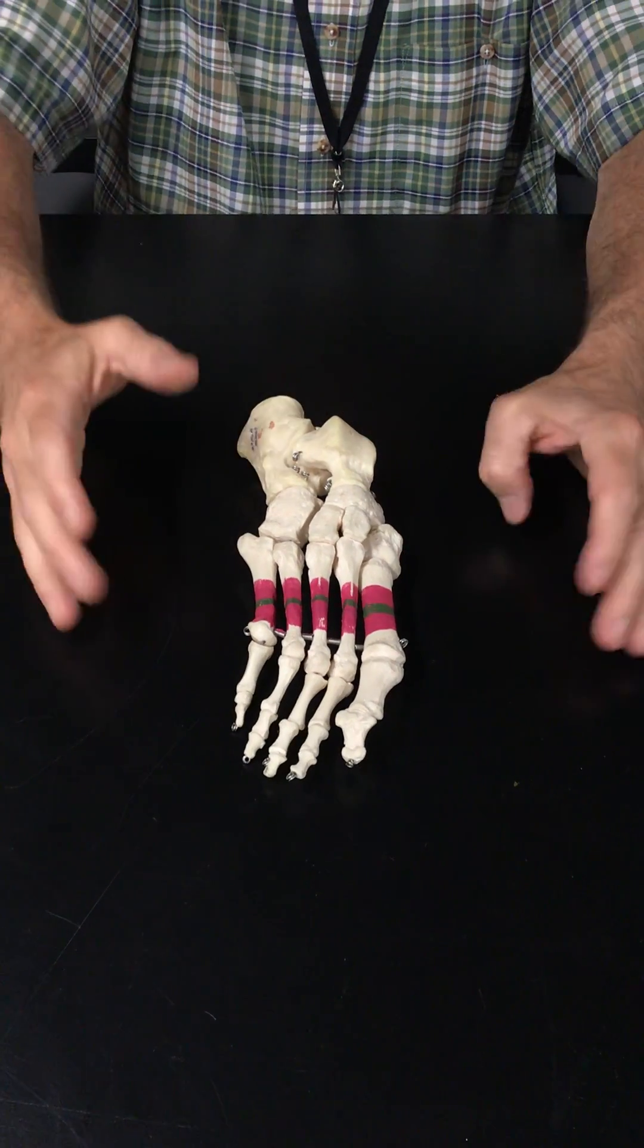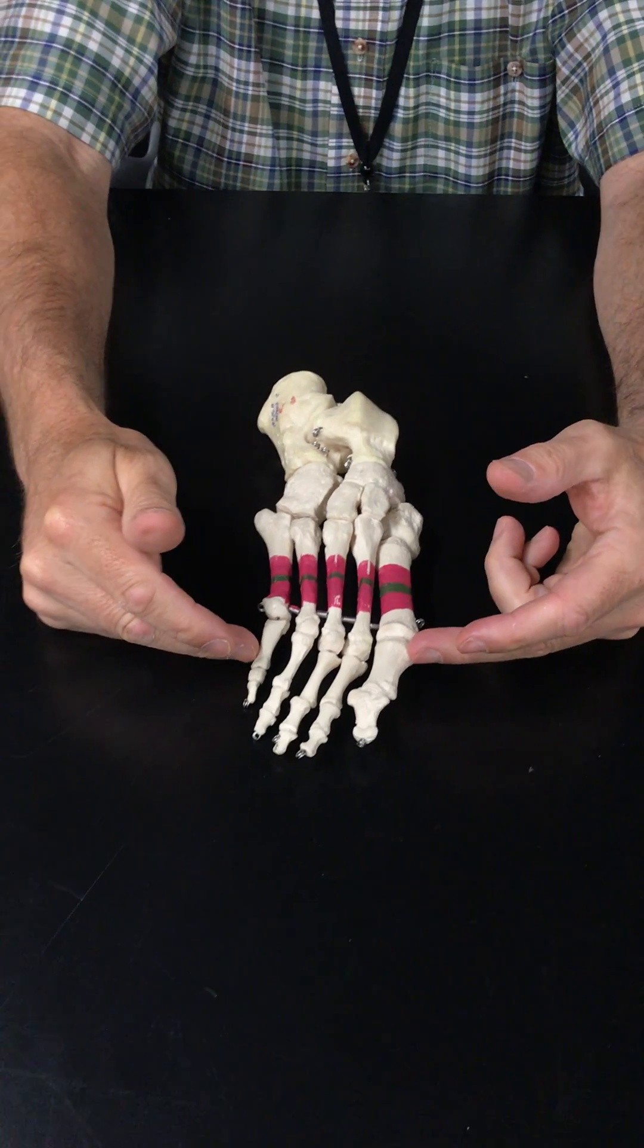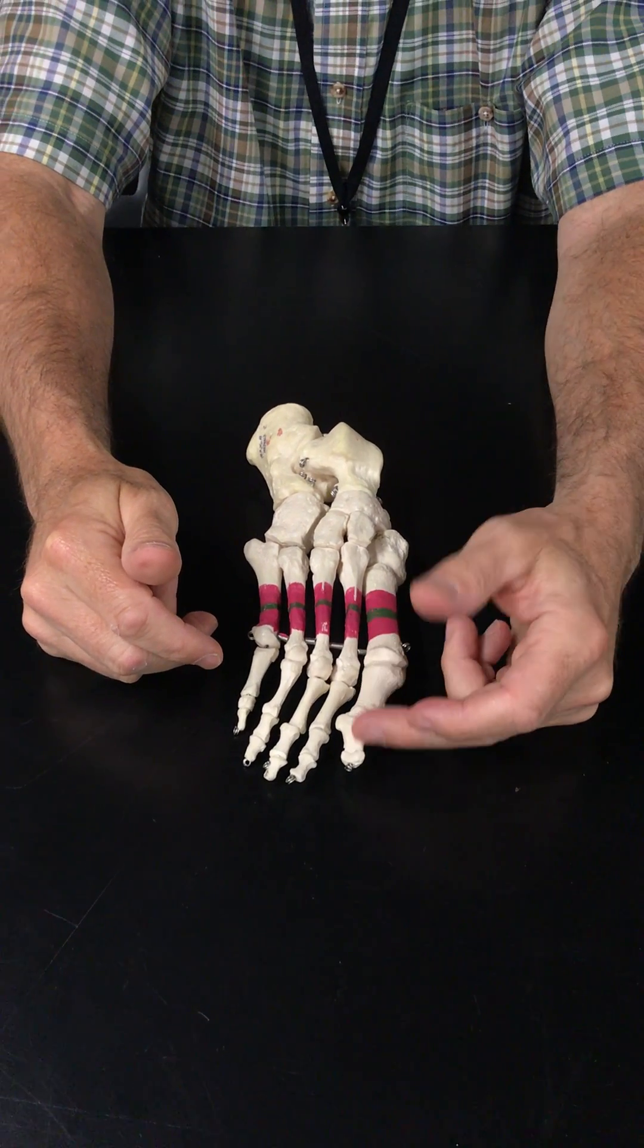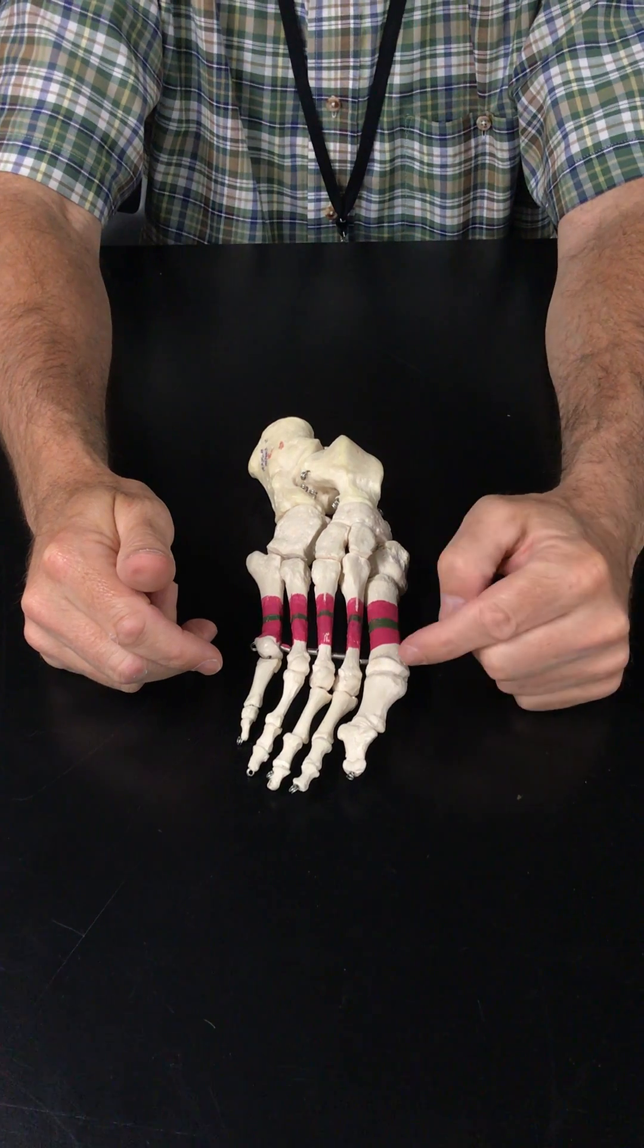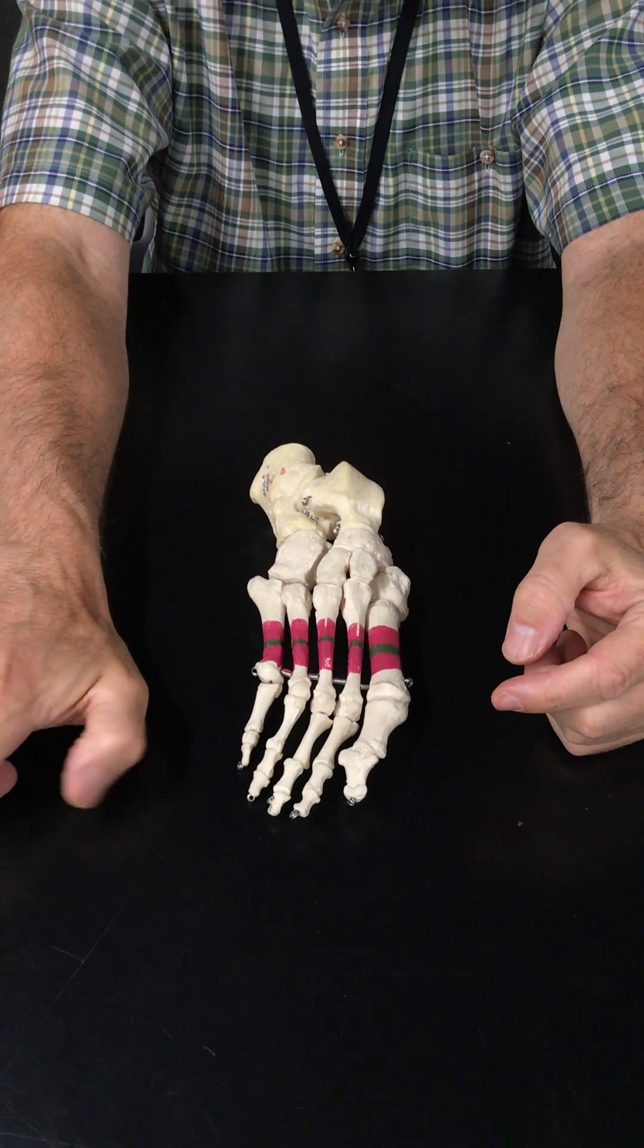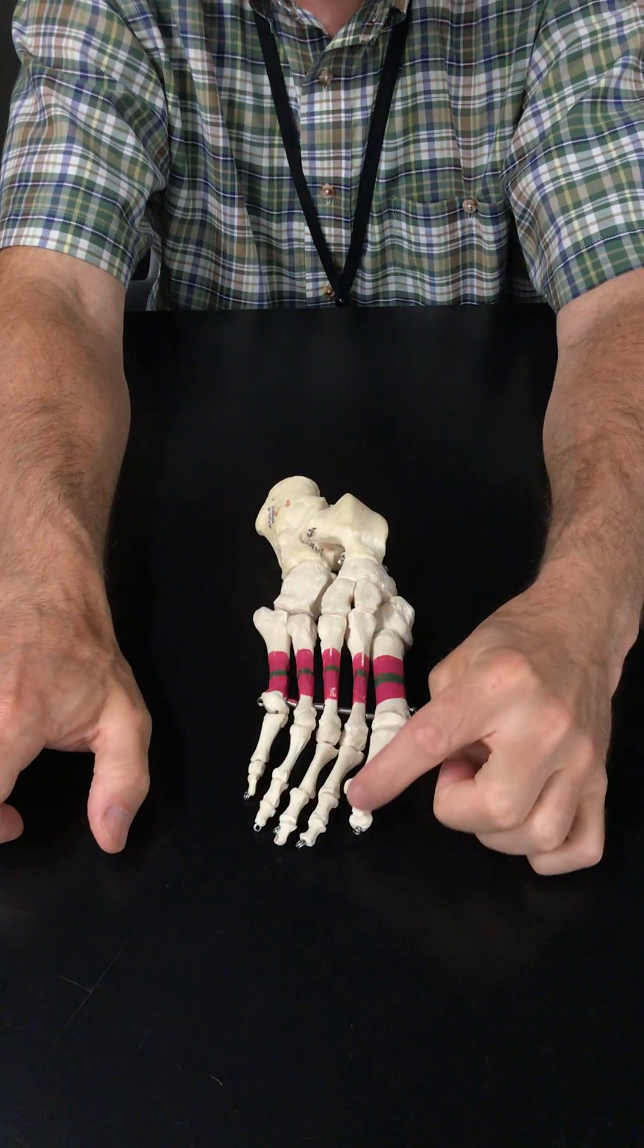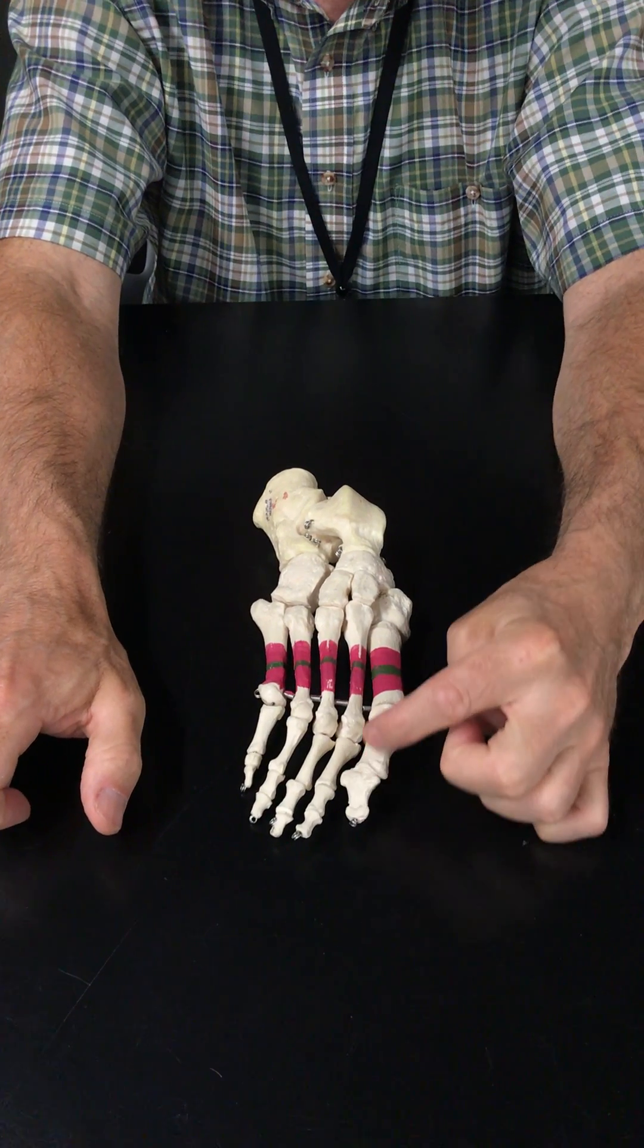So let's start with the phalanges. There are five digits. The big toe is the first digit, also known as the hallux. And like in the hand, the thumb, the pollux, it only has two phalanges. Same in the toe, only two phalanges.